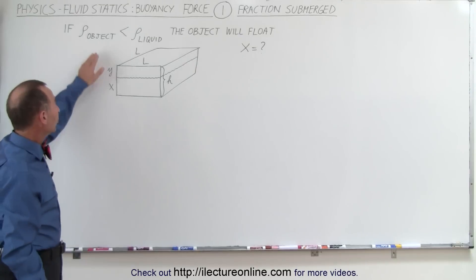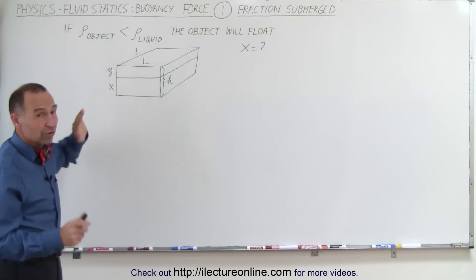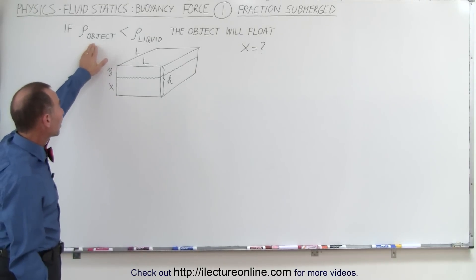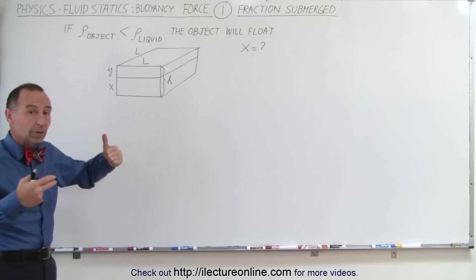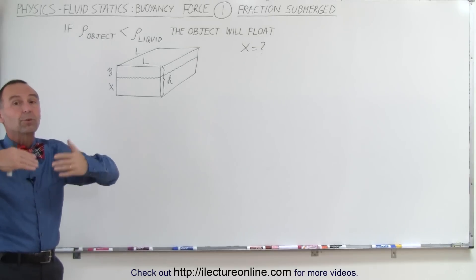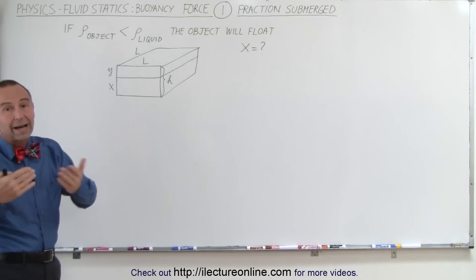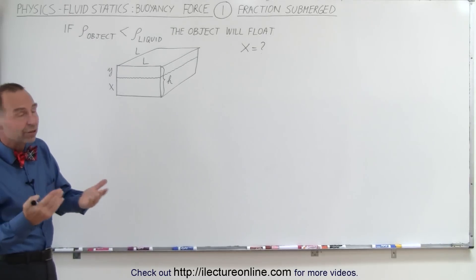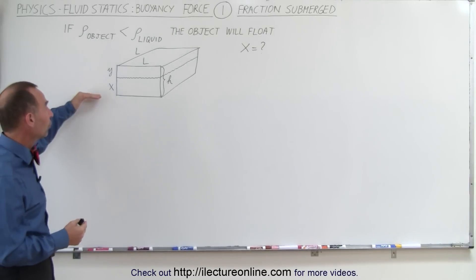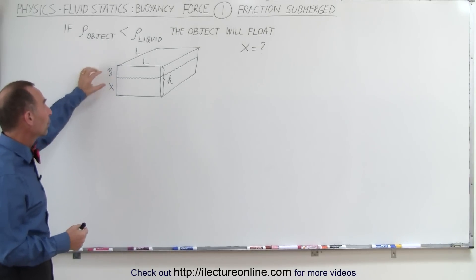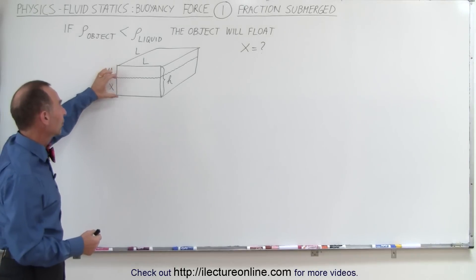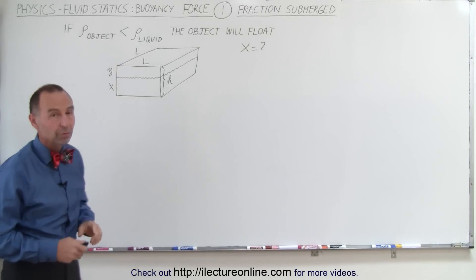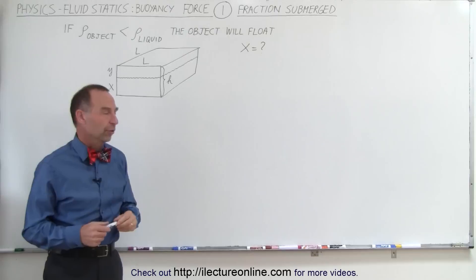First of all, we need to understand that if the density of an object is less than the density of the liquid, then the object will float — like ice or wood, which typically float in water with a small portion above the surface and some portion below the surface.